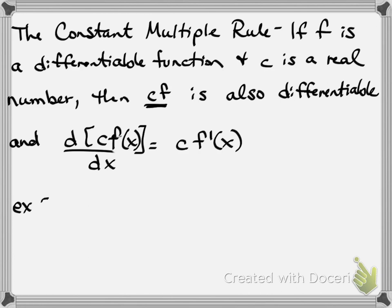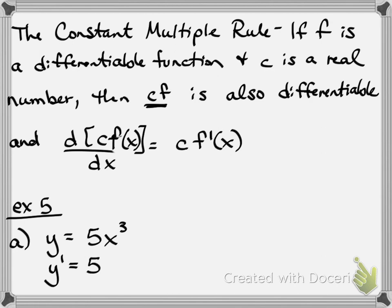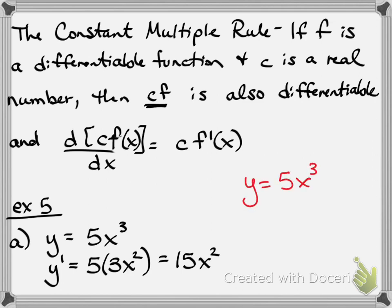Example A: y equals 5x to the third. We have a constant times something to a power. The derivative is 5 times the derivative of x to the third, which is 3x squared, giving us 15x squared. Normally I look at it as: bring the power down and multiply it by the constant, then reduce the power by one. We get the same result, and that's probably how you'll do it too.